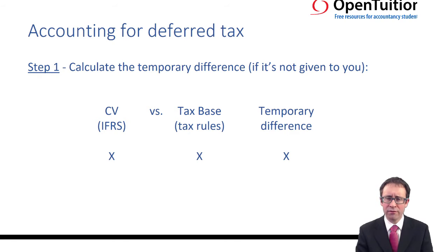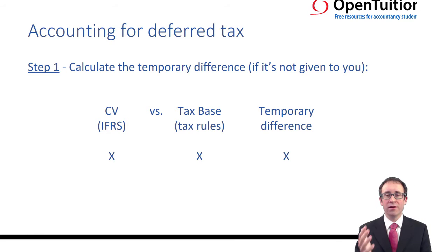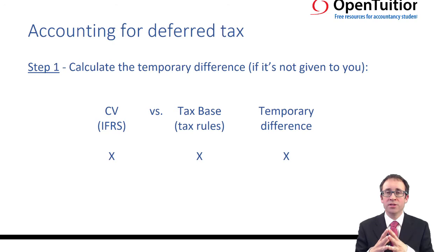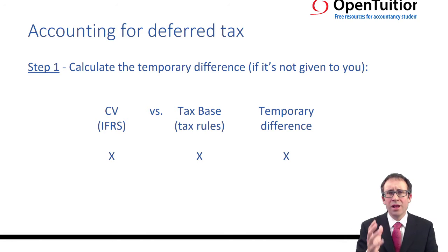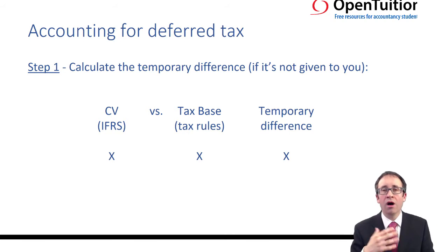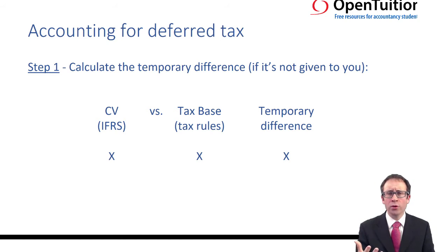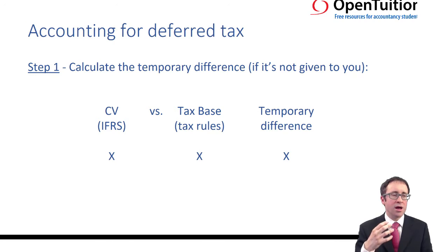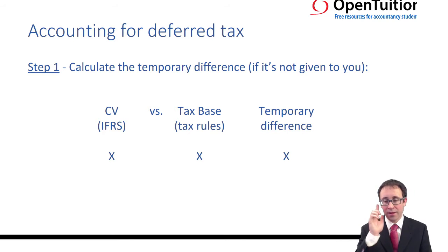Step one is to calculate the temporary difference. Be careful — in some questions it has been given to you, but if not you will need to look at the difference between the carrying value and the tax base. The carrying value is what we've recorded on our statement of financial position using IFRSs and IASs. The tax base is effectively how the tax authorities would deal with the transaction — applying their rules as if we're creating a tax balance sheet, applying tax depreciation to the value of the asset, applying the fact that they tax things on a cash receipts basis as opposed to an accruals basis. The difference between the carrying value and the tax base gives you your temporary difference.